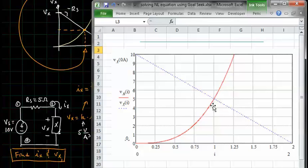And the intersection, as you can see, occurs at 1 amp. So, 1 amp is the solution.